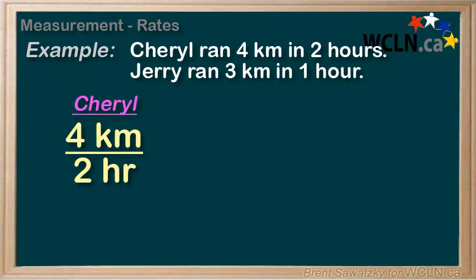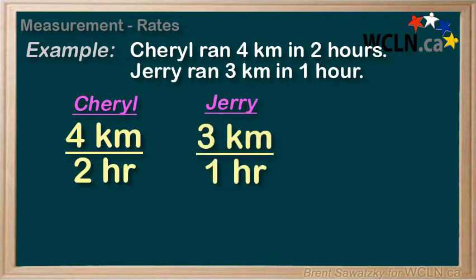At what rate are they running? We can look at the units. The rate here has units of kilometers per hour, just like the speedometer in your car. Let's compare the running rate, or the speed, of Cheryl as compared to Jerry. For Cheryl, the rate would be 4 kilometers over 2 hours. For Jerry, his rate would be 3 kilometers over 1 hour.